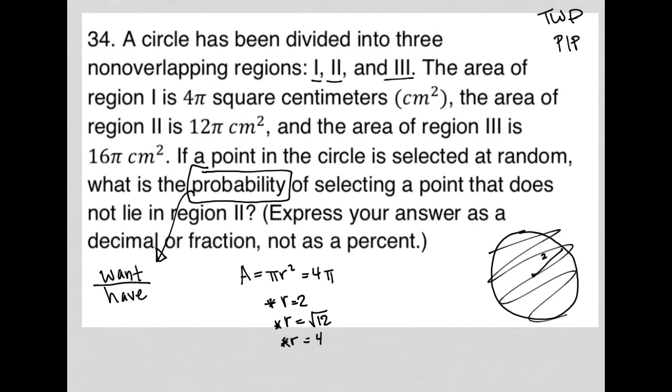So what do we want? The probability of selecting a point that does not lie in region two. Well, what does that mean? That means it lies in either region one or three. So the area for region one is 4π and the area for region three is 16π. So what we would want is for that point to be in either of those areas, which is a total of 20π.